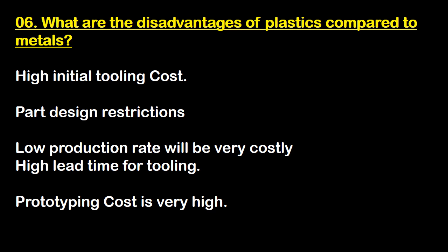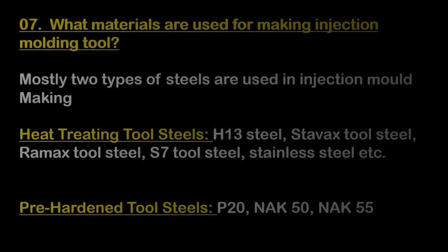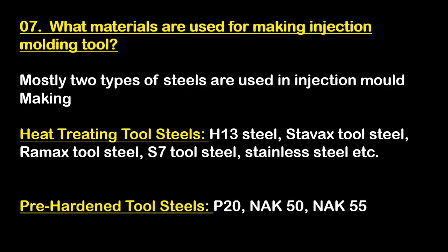Disadvantages of plastic compared to metal: high initial tooling cost, part design restrictions, low production rate will be very costly, high lead time for tooling, and prototype cost is very high.